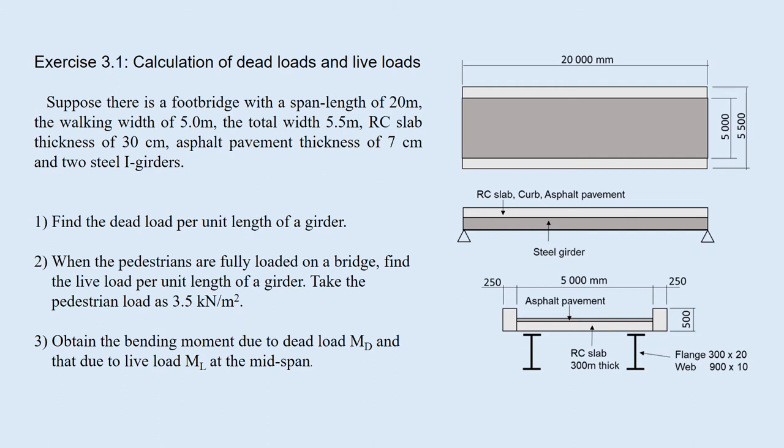Exercise 3.1. Calculation of dead loads and live loads. Suppose there is a footbridge with a span length of 20 meters, the walking width of 5 meters, the total width of 5.5 meters, RC slab thickness of 30 cm, the asphalt pavement thickness of 7 cm, and two steel I girders, as shown in these figures. 1. Find the dead load per unit length of a girder. 2. When the pedestrians are fully loaded on a bridge, find the live load per unit length of a girder. Take the pedestrian load as 3.5 kN per square meters. 3. Obtain the bending moment due to the dead load MD and that due to live load ML at the mid-span.